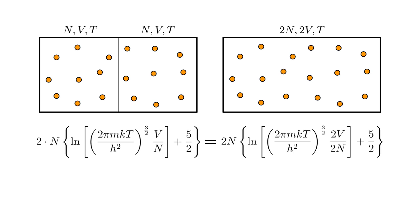The result is that both expressions have a factor of two n in front. And in the argument of the logarithm, they have, respectively, factors of v over n and two v over two n. Since the factors of two cancel, these are equal. Therefore, if we remove the divider, the entropy is the same. If we replace the divider, the entropy is the same. We have resolved the Gibbs paradox.